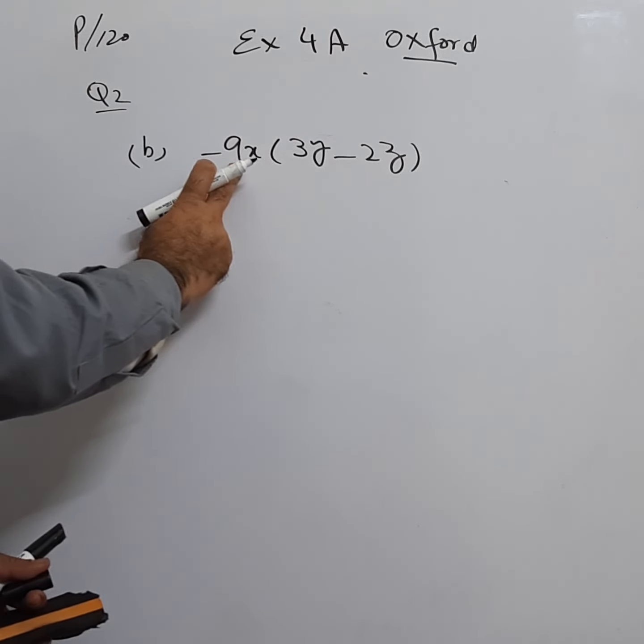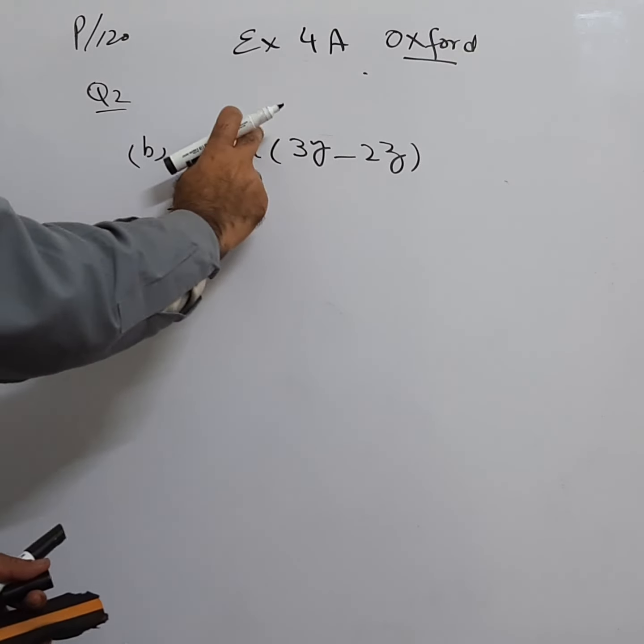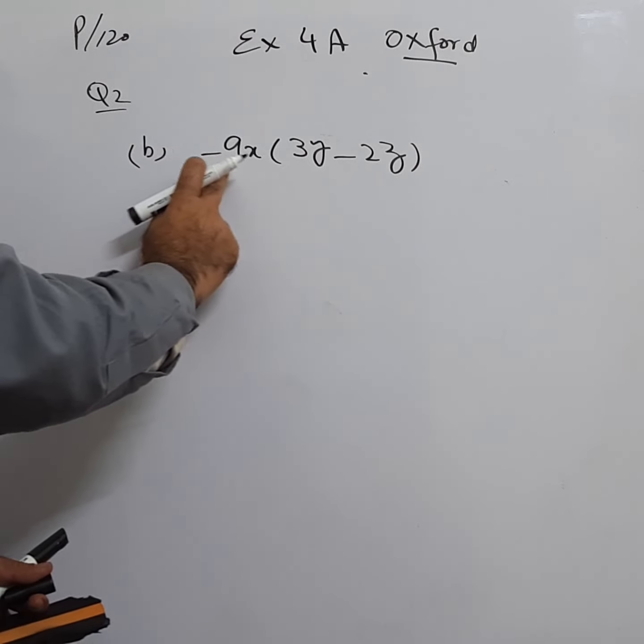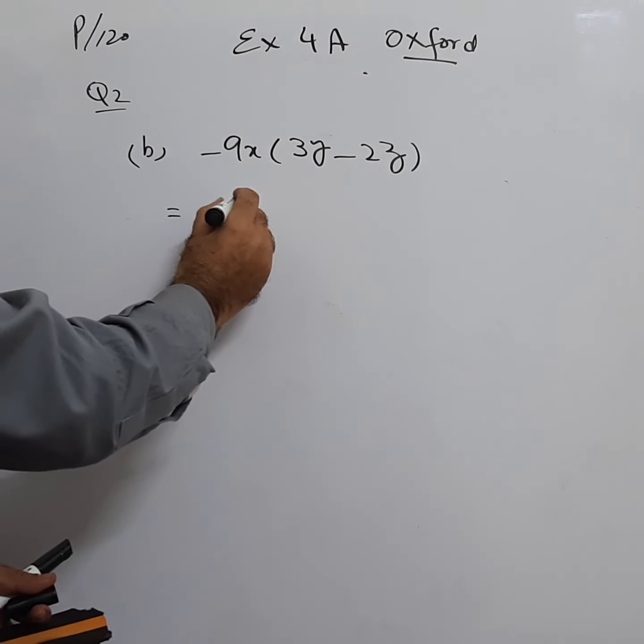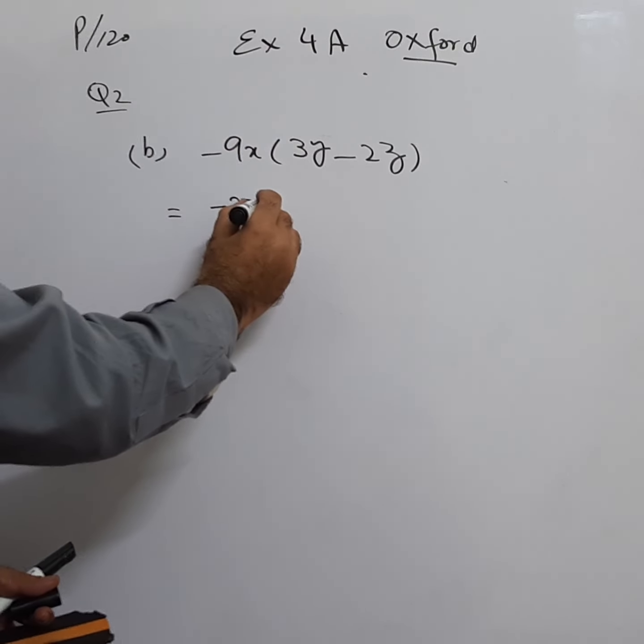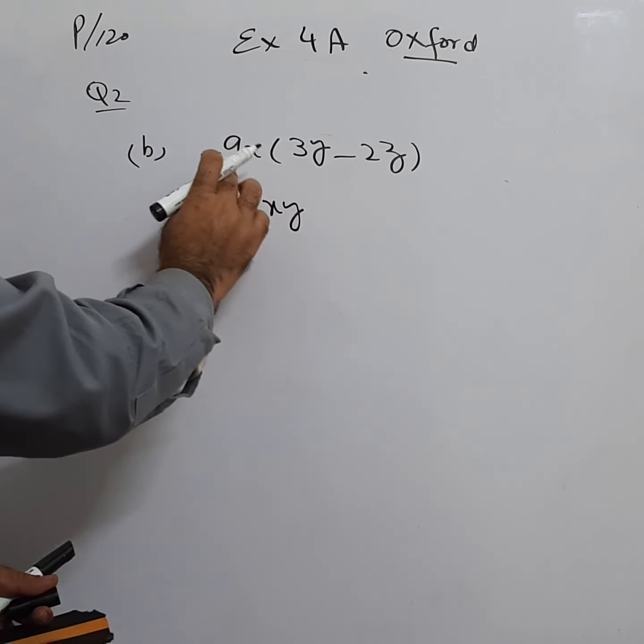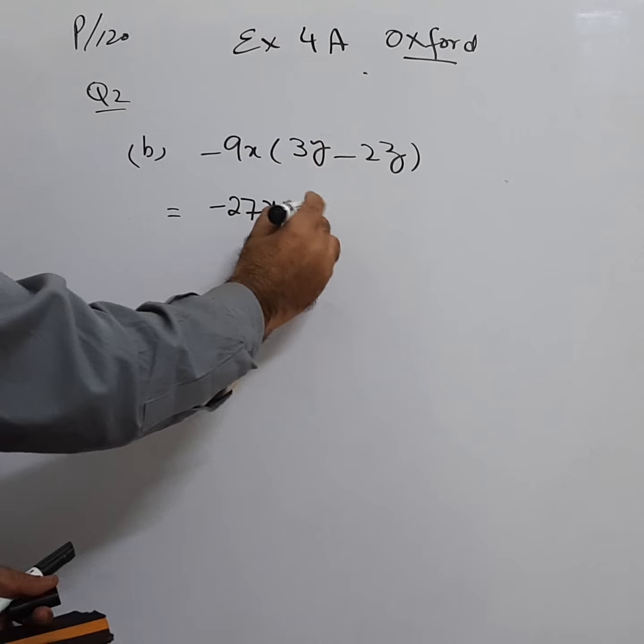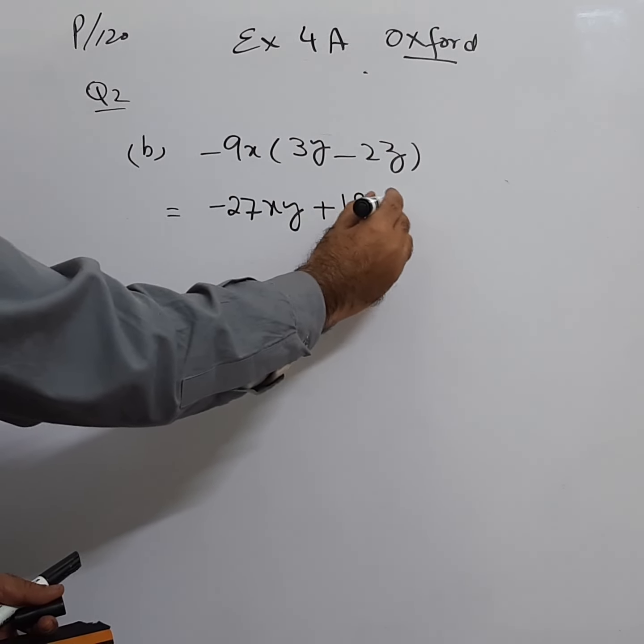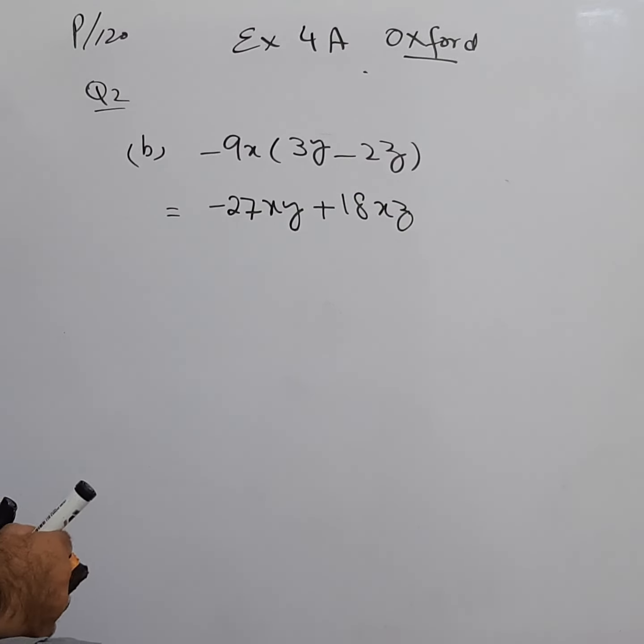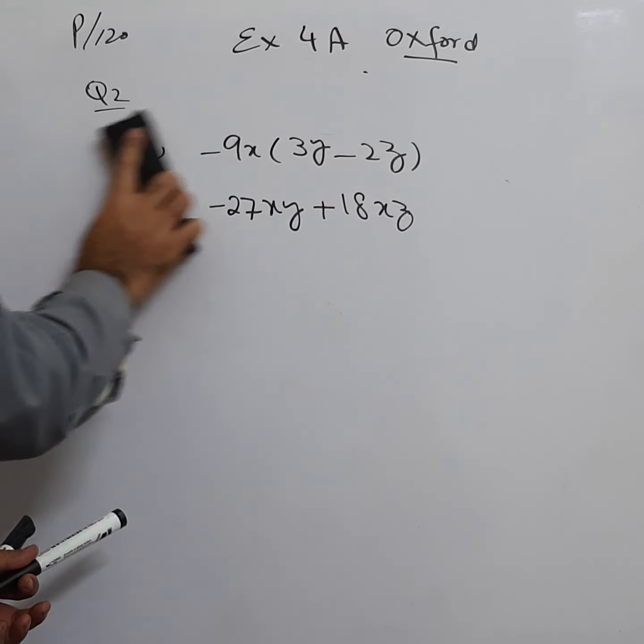-9x will be multiplied with 3y. 9 times 3 is 27, it becomes -27xy. Then minus will be multiplied with the minus, it becomes plus. 9 times 2 is 18, x into z is xz, so +18xz. This is the answer. This is the way to expand the expression.